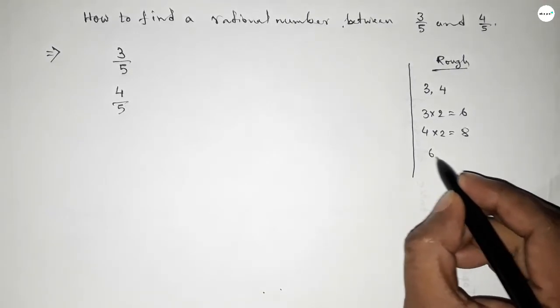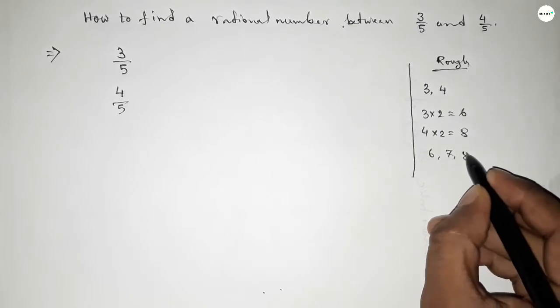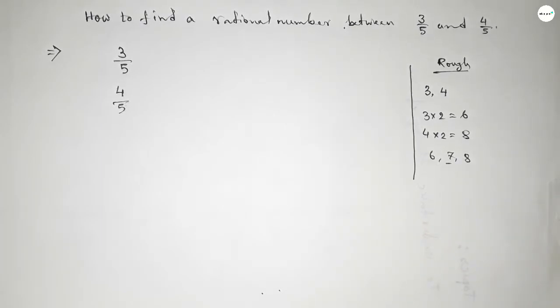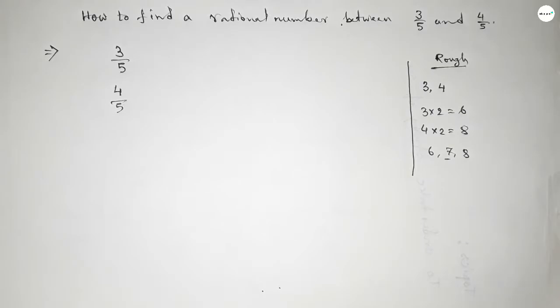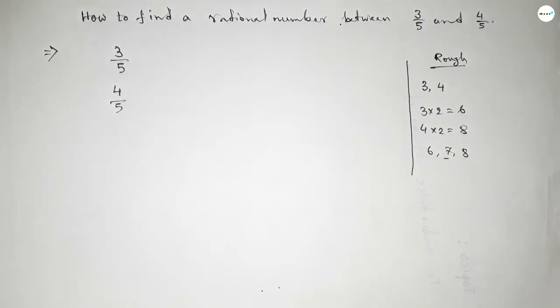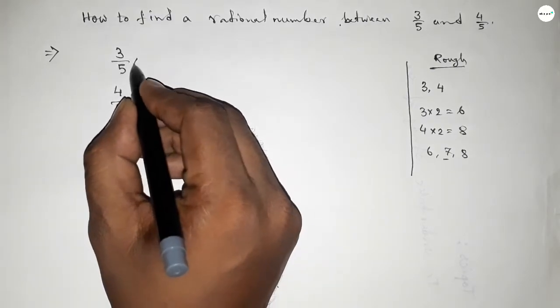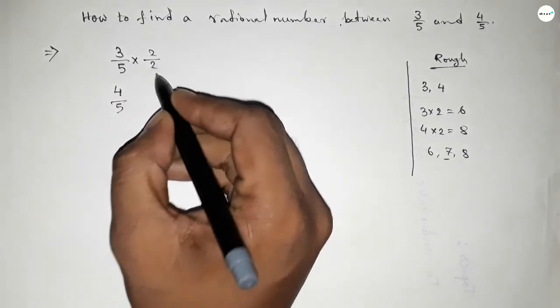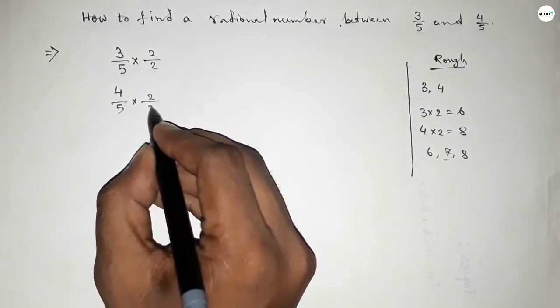Between 6 and 8, we can get one natural number. So we multiply 3/5 and 4/5 by 2, both numerator and denominator.